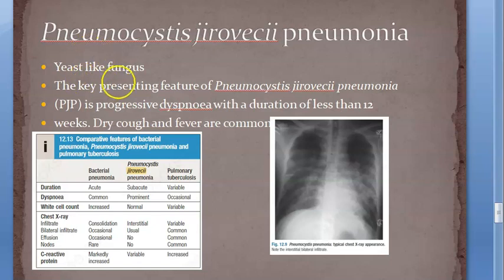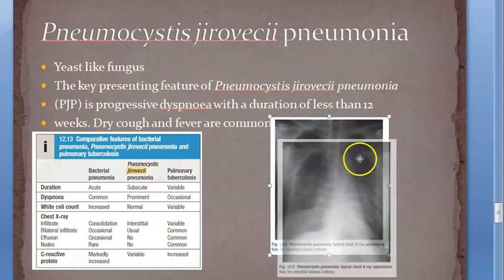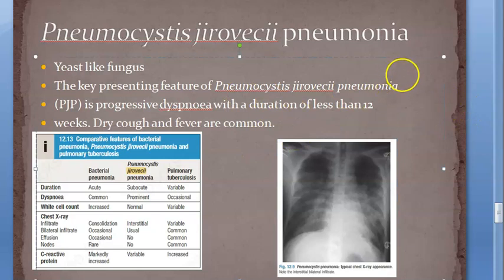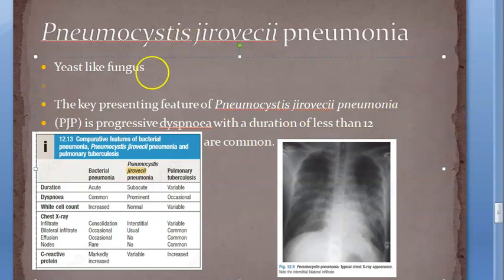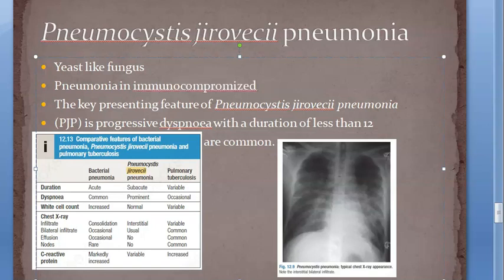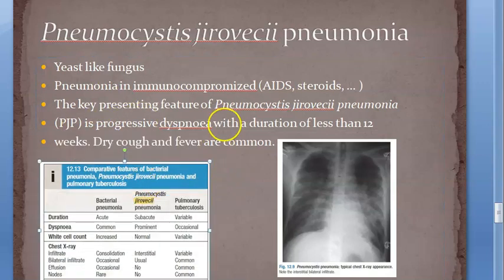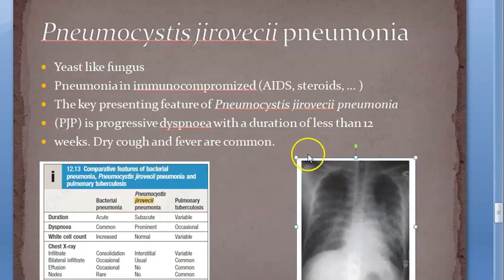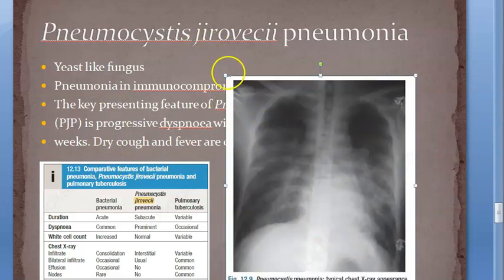Pneumocystis jirovecii is a yeast-like fungus that causes pneumonia, especially important in immunocompromised individuals - such as AIDS patients, those taking steroids, or many other conditions. Sometimes pregnancy is also an immunocompromised state. Once this fungus goes and sits in the lungs, there will be bilateral infiltrates.